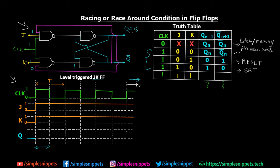Since we assumed Q as 0, this 0 is also fed back to the second lower NAND gate. Since any input is 0, the NAND gate output is going to be high — so the output is 1. This 1 is fed back, and since we're getting output 1 at Q bar, it is also fed back to the upper J flip-flop. Now all three inputs are 1, so output is 0, making Q become 1.